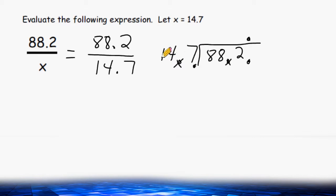So now we have to divide 147 into the value of 882. Now of course 147 does not fit inside 8, and it doesn't fit inside 88, so we are not allowed to write any digits on top of those values.